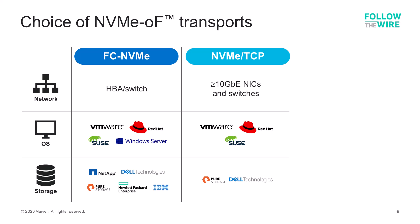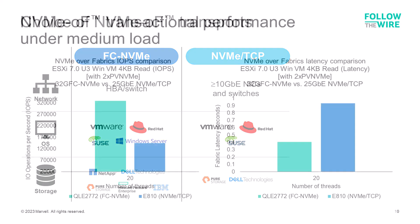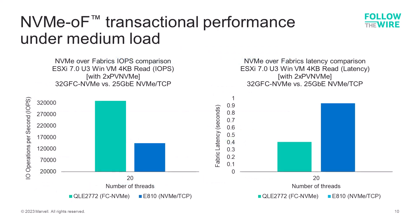Let's dive into the performance characteristics of FC NVMe compared to NVMe over TCP. Here's a result of tests done at Marvell to show the efficiency of NVMe over fabric protocols. FC NVMe can easily deliver high IOPS due to the efficiency of the offload technology built into fiber channel. Remember, fiber channel is fully offloaded with all the IO processing done in the HBA to provide direct memory access without server CPU intervention.